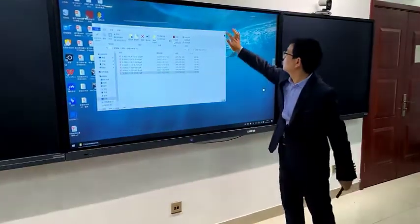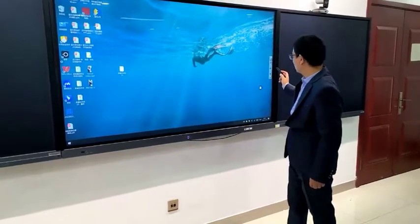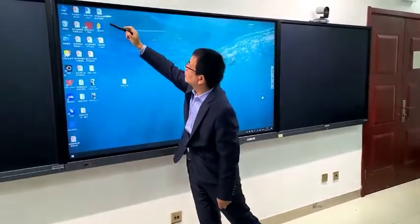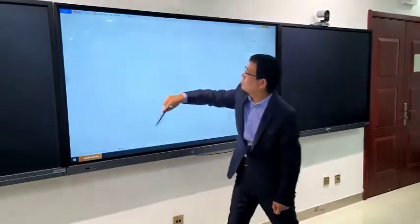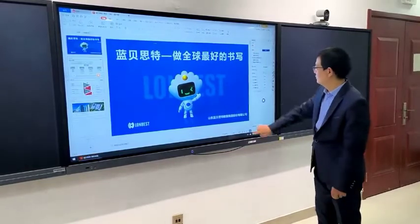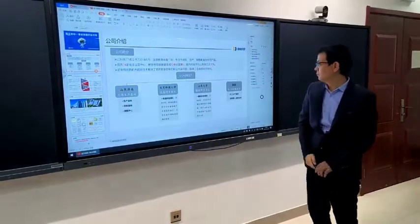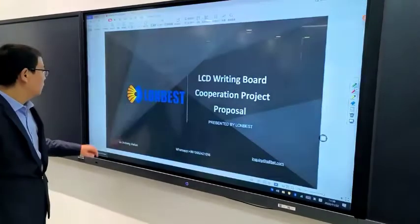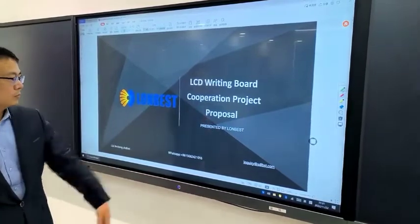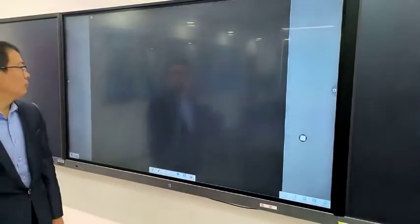There is a small computer icon on left bottom. We can leave the software window and continue teaching with other teaching resources like PPT, or any other files on desktop of the touchscreen panel. If we want to be back to electronic blackboard software, we just click the computer icon on left side.